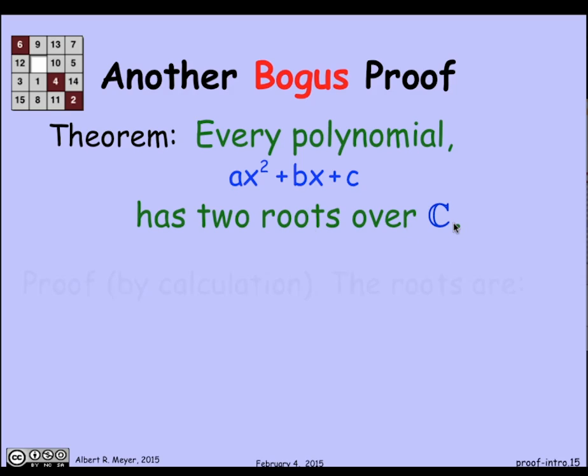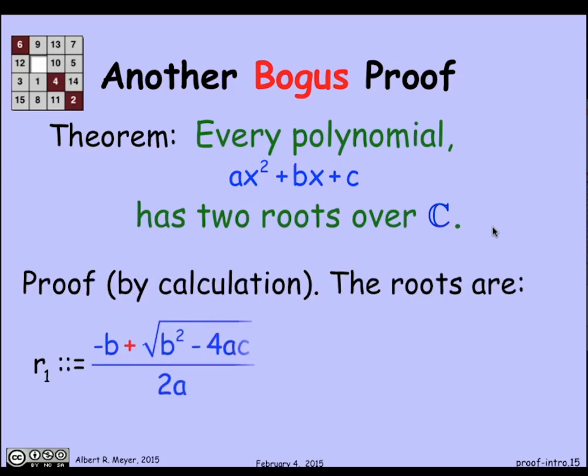And how do you prove that? Well, you just write down the formulas for the roots. You know the quadratic formula. One root is minus b plus the square root of this quantity over 2a, and the other root is minus b minus the square root of b squared minus 4ac over 2a.